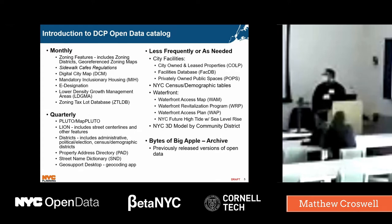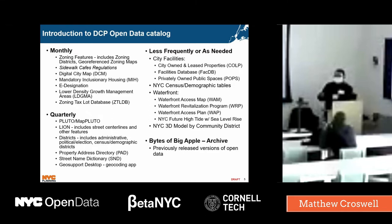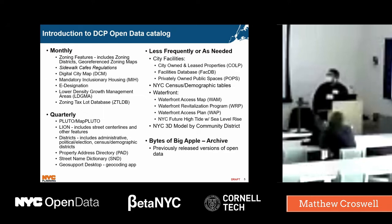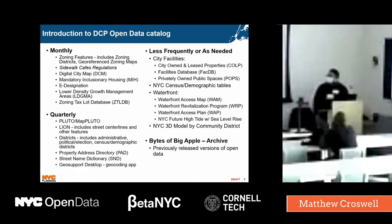In the quarterly section, we have our probably what's considered our flagship — PLUTO. This is a tax lot-based data set that has over 60 attributes on property, building, zoning, and land use information, with sources including City Planning and Department of Finance. We also release four data sets that are part of an interagency maintenance system on the citywide street centerline. The Department of City Planning maintains the line file, which is the street centerline and has all the address information on those streets. All of the political, census, demographic, and administrative boundaries are also maintained in the system and aligned to that line file.